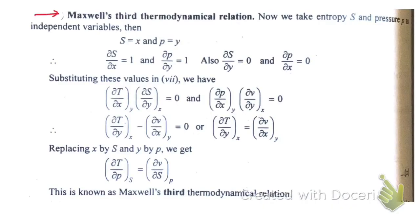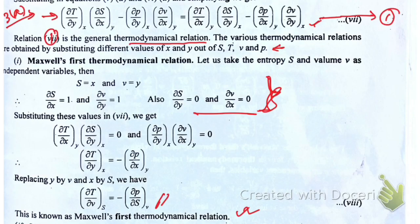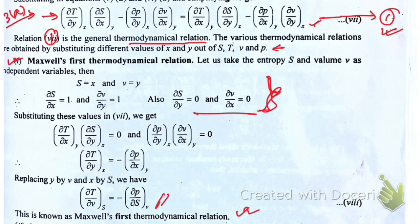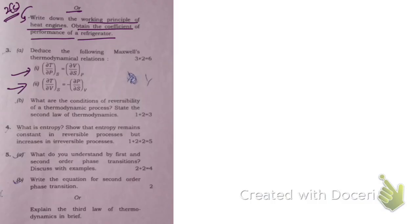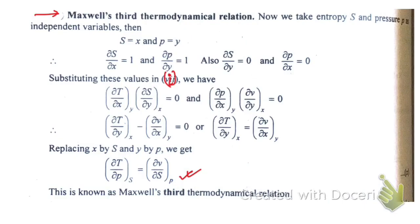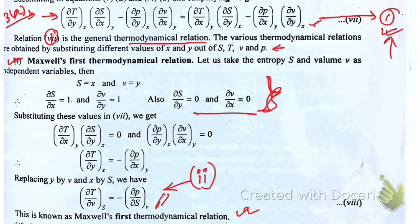From equation one, after substituting these results, we can obtain the first relation. One more relation needs to be established — both are derived from equation number one. Note that in the question the first relation asked is what I derived second, and vice versa, so let me clarify the numbering: this is relation 3a-one and this is relation 3a-two. Just pause the video and note those down.